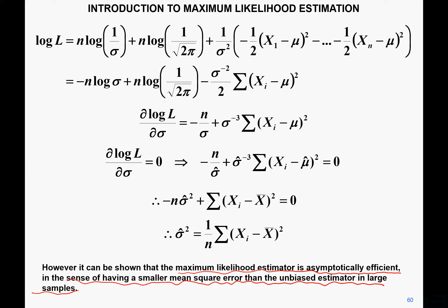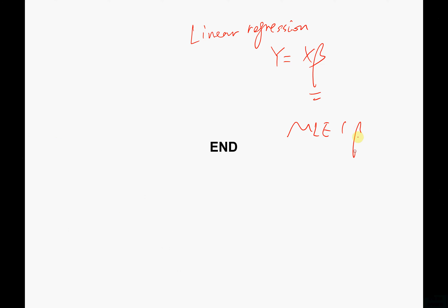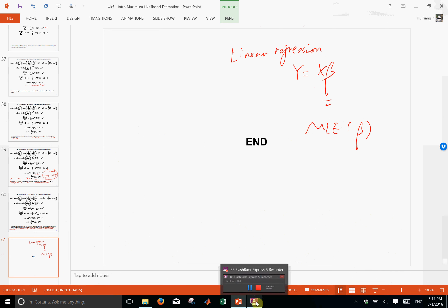This concludes the introduction to maximum likelihood estimation. MLE is useful in research for estimating parameters — not just mu and sigma in the normal distribution, but also parameters like beta in a linear regression model y equals x beta, given observations x and y. Thank you.